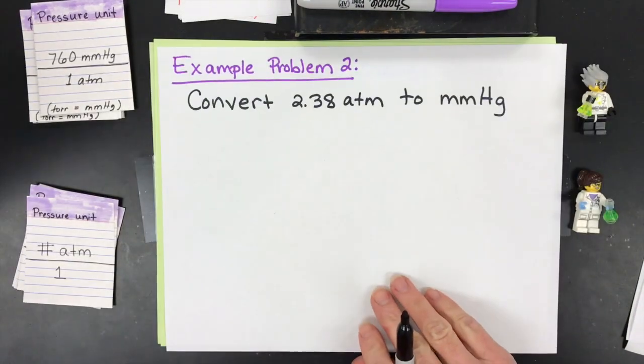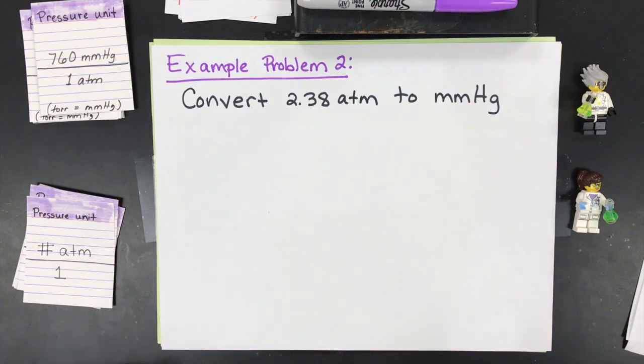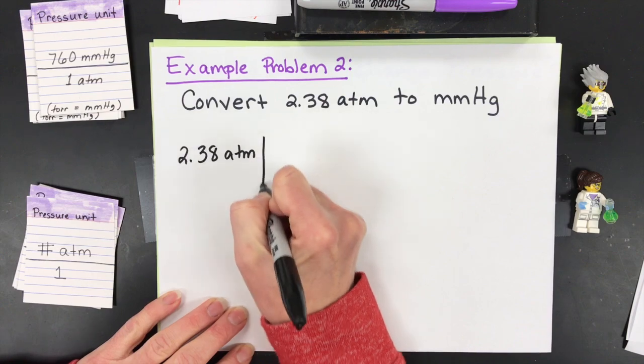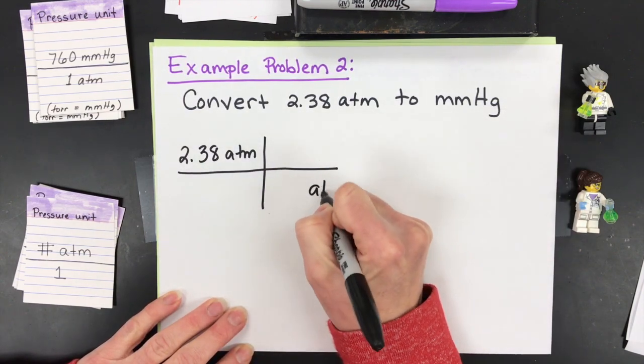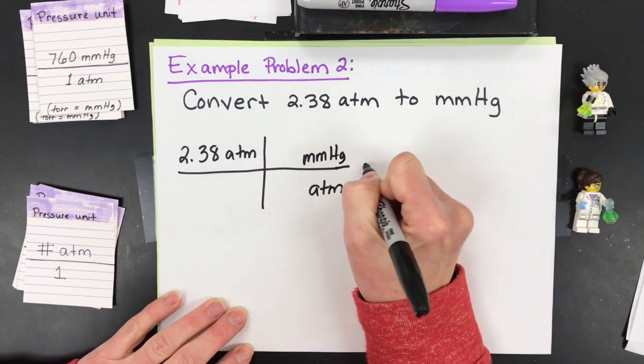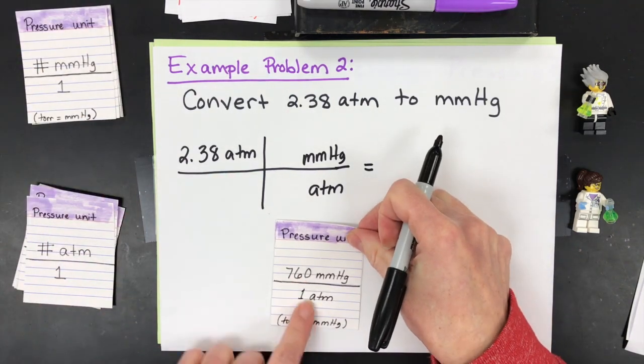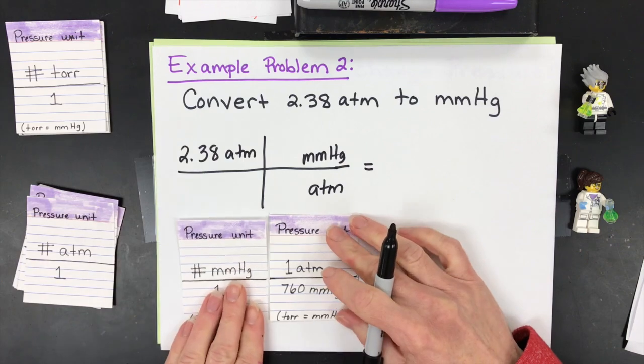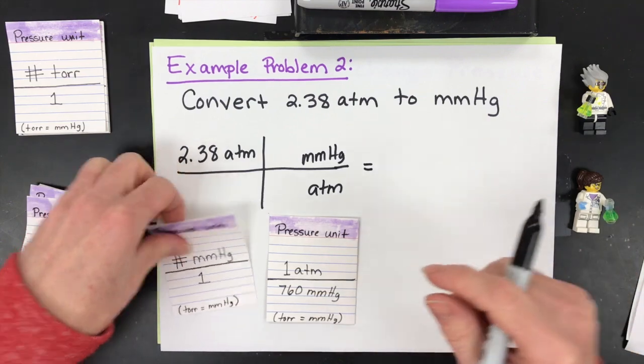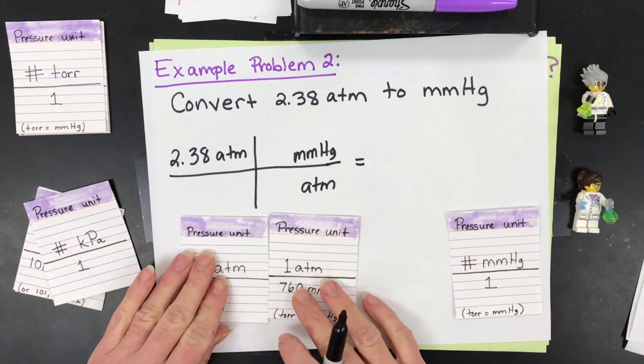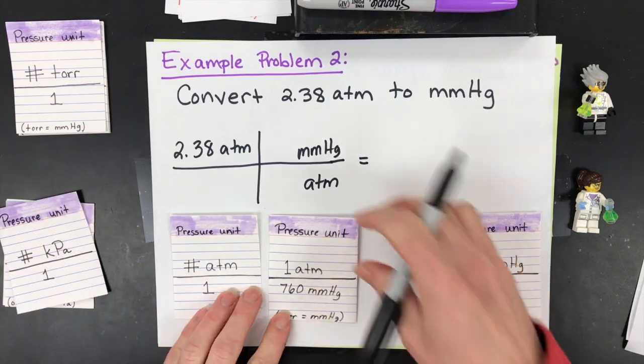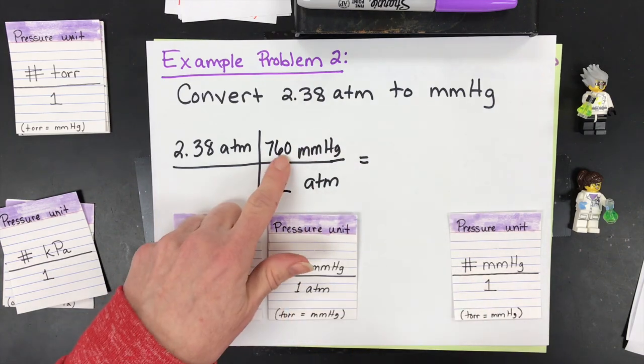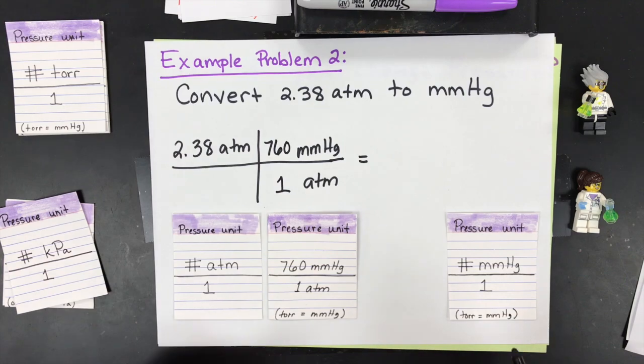On to the next one. Here's example problem two. We're going to try to convert from 2.38 atm to millimeters of mercury. So atm has to be on the bottom and mmHg is on the top. Here's the conversion I made: 760 mmHg over 1 atm. The reciprocal would be the atm on the top and that on the bottom. I want 1 atm on the bottom and 760 on the top. Don't worry about how many significant figures there are, it's your beginning one that matters.